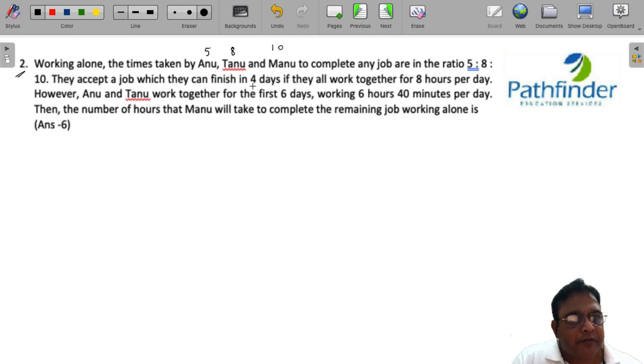They accept a job which they can finish in 4 days if they work for 8 hours per day. However, Anu and Tanu work for the first 6 days at 6 hours and 40 minutes. Then the number of hours that Manu will take to complete the remaining job.